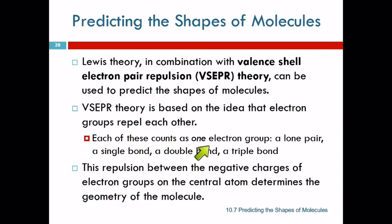Each of these counts as one electron group: a lone pair, that's one group. A single bond is one group. A double bond is one group. A triple bond is one group. I know a triple bond has six electrons in it, but it's one group.